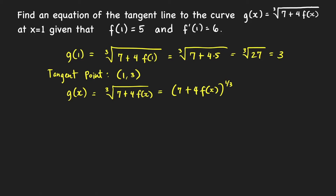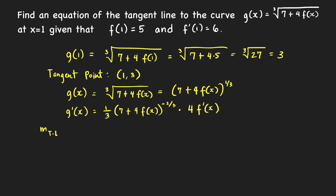Applying the power rule with the chain rule, G prime of x equals — bring down the power — 7 plus 4f(x) raised to negative two thirds, times the derivative of the base, which is 4 times f prime of x. Therefore the slope of the tangent line at the given point is the value of this derivative at x equals 1: one third times 7 plus 4 times f of 1, raised to negative two thirds, times 4 times f prime of 1.